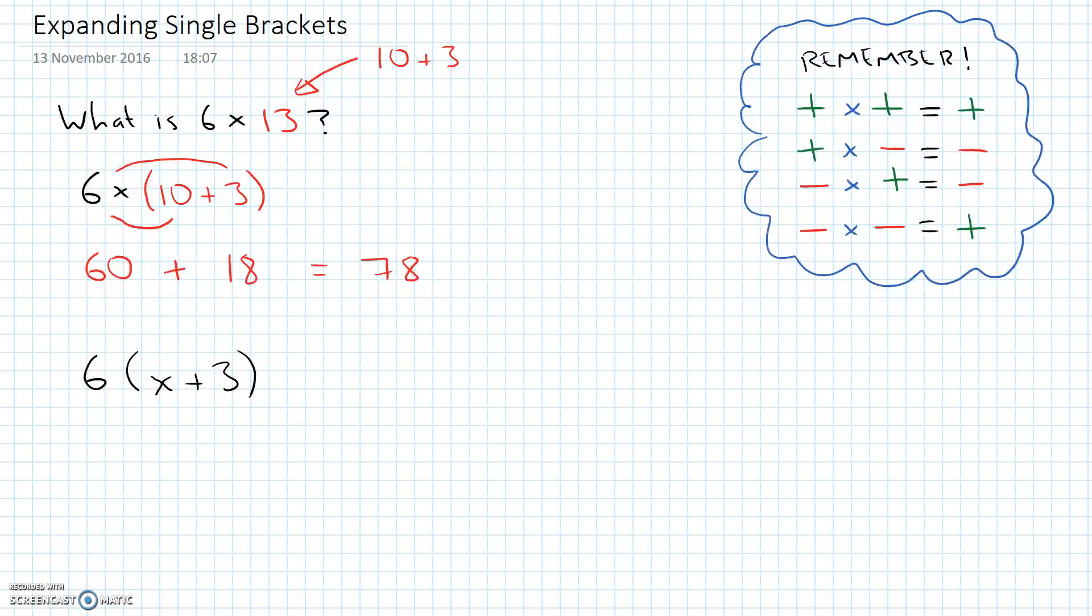Well, if we look at what we did above, we found that we needed to multiply this term outside the bracket, the 6, by the first term inside it, which in the first example was 10. But in our second example now is x. So we need to do 6 times x. But the second thing we did above is we multiplied our term outside the bracket with the second term inside, which above was a 3. And in the bottom example is still a 3. So here if we expand out the brackets and we follow the same thing that we did in the example above where we just had numbers, we're going to get 6 times x, which is 6x, plus 6 times 3, which is 18. So by expanding out our brackets, we can say that 6 bracket x plus 3 bracket is equal to 6x plus 18.